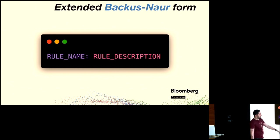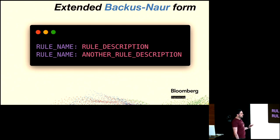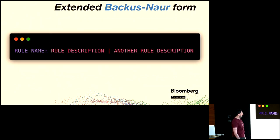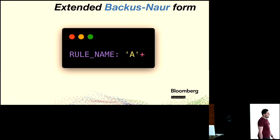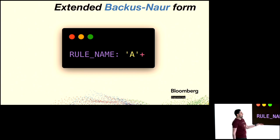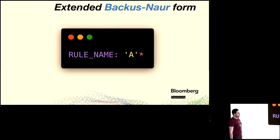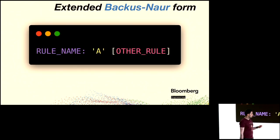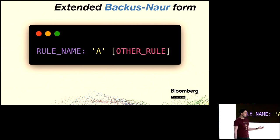We have rules here and rule descriptions on the other side. We can have many descriptions for the same rule — this basically means the rule can produce two different things. Usually instead of doing it that way, we use the OR operator, meaning the rule can be this chunk or that other chunk. We also have the plus sign, meaning one or more. We have the asterisk, which means zero or more. And we have square brackets, which means optional.